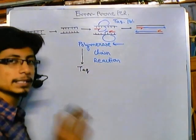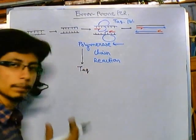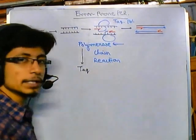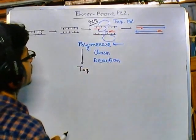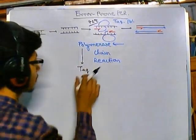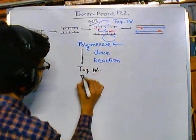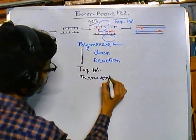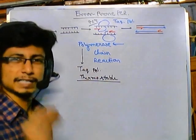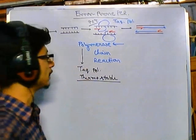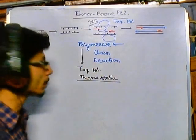Taq polymerase is isolated from Thermus aquaticus, which is a thermotolerant bacterium, because during polymerization the temperature is usually set up to 72 degrees Celsius. We need a thermostable polymerase that can function at this high temperature. While other thermostable polymerases exist, Taq polymerase is preferred for its higher productivity and heat tolerance.